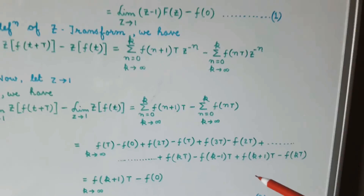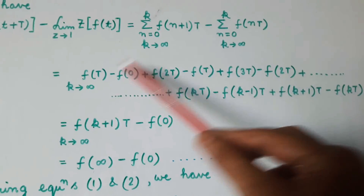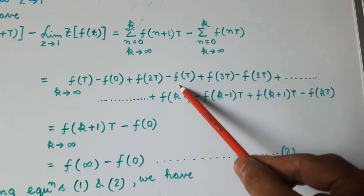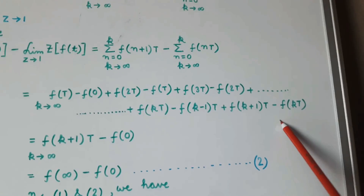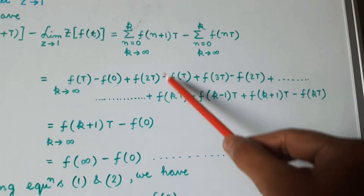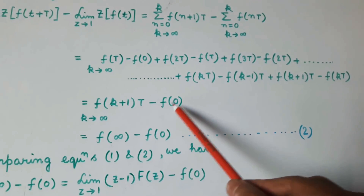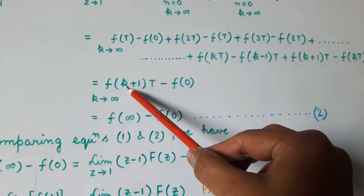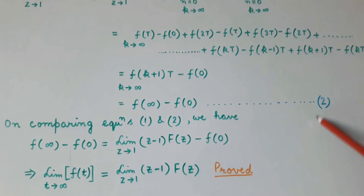Now for different values of n, we can write this equation as f(T) minus f(0), plus f(2T) minus f(T), plus f(3T) minus f(2T), up to f(kT). We find that these intermediate terms cancel out and we are left with only f((k+1)T) minus f(0), when k tends to infinity. Substituting k tends to infinity, this becomes f(infinity) minus f(0). Let this be equation number 2.